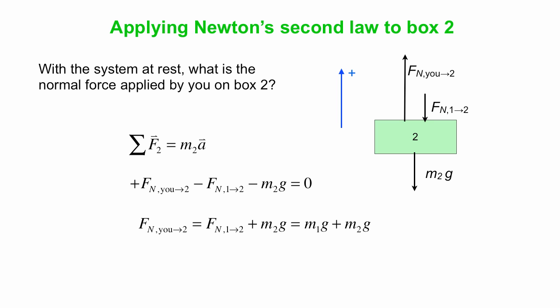And then you can solve for Fn you on two. Okay, so you rearrange Fn you on two is Fn one on two plus M2g equals M1g plus M2g. How do we know that? Well we're using what we learned from the previous screen in our free body diagram of box number one. We know the normal force applied by two on one is M1g, so then Fn one on two is equal and opposite, so it must have a magnitude of M1g. Okay, so that all makes sense. Fn you on two is, you have to support the total weight of the system. Makes sense.